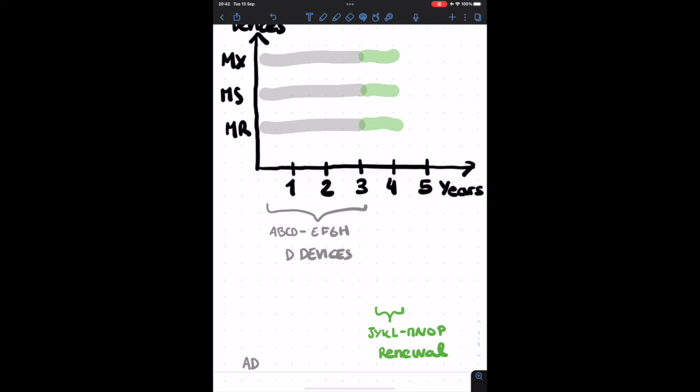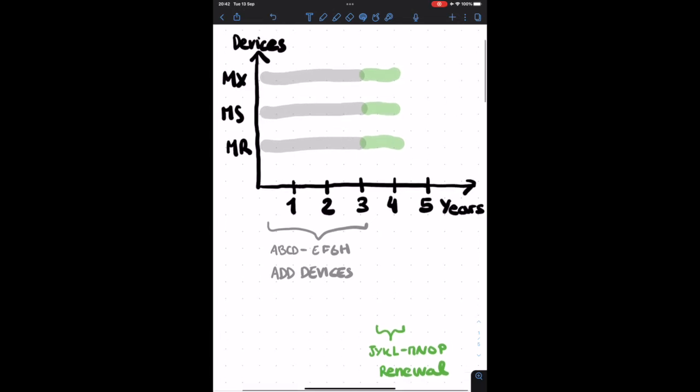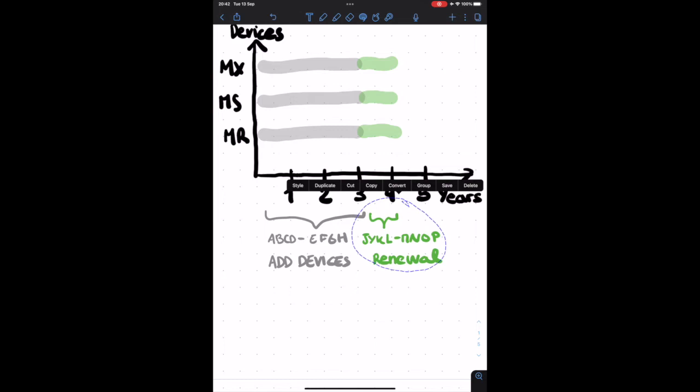Afterwards, we are going to buy another license for a one-year SKU, so for MX, MS, MR, and we are going to add it in the organization as renewal. In this way, we're gonna have four years license.